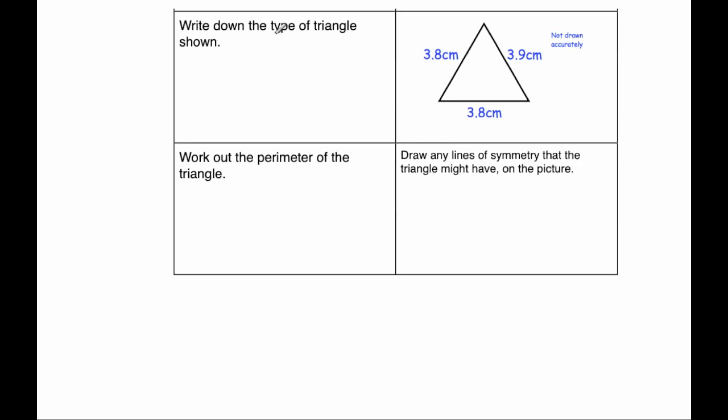Next question says, write down the type of triangle shown. So here we've got a triangle. And the lengths of the sides are 3.8 cm, 3.9 cm and 3.8 cm. So as you can see, we've got two sides of the same length. That's the two sides that are 3.8 cm long. So it would be an isosceles triangle.